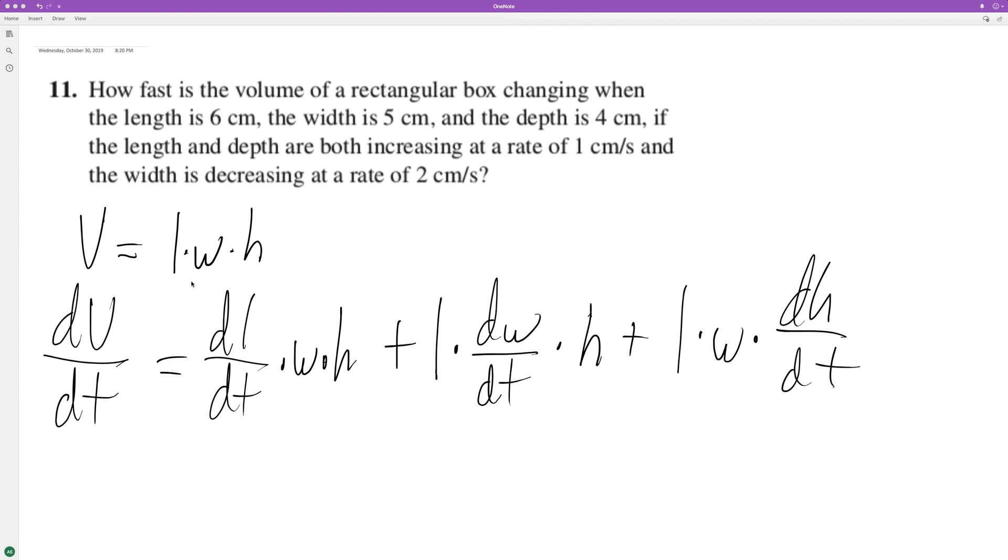We have a rectangular box changing when we have a length of 6, width of 5, and depth of 4. If the length and depth are increasing at 1 centimeter a second and the width decreases at 2 centimeters a second.